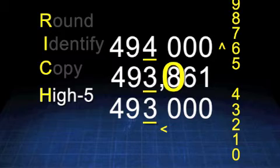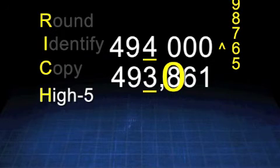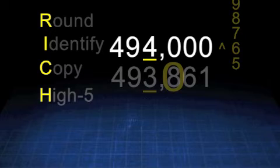The number we have to evaluate is the circle number, which is 8. Is the number 8 five or more, or four or less? The number 8 is five or more, which means we have to increase the score. The 3 has to increase to turn into a 4. The answer is 494,000. We have rounded using rich.